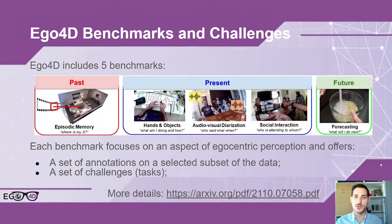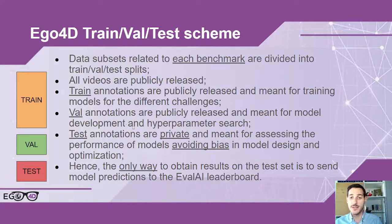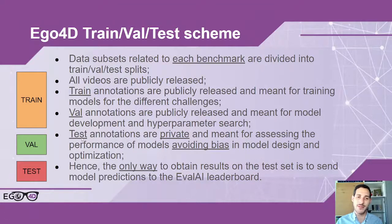You can find more information in our CVPR 2022 paper. Each data subset related to a given benchmark is divided into a training set, validation set, and a test set. All videos are publicly released. The training annotations are publicly released and meant for training models. The validation annotations are publicly released for model development and hyperparameter search. The test annotations are private and meant for assessing final model performance to avoid bias in model design and optimization.